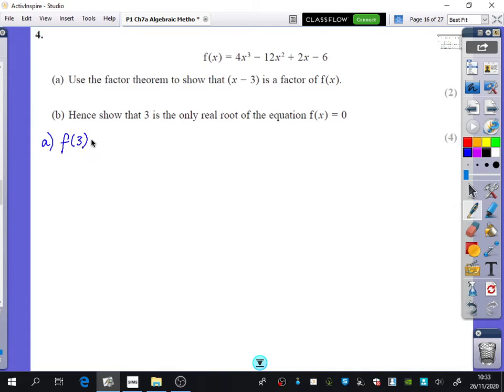Positive 3. So I'm going to say f of 3 is going to be equal to 4 times 3 cubed minus 12 times 3 squared plus 2 times 3 minus 6. And no surprises here. I'm not even going to type. You should type it in your calculator. But it's equal to 0 because it's a factor. They've told us it's a factor.